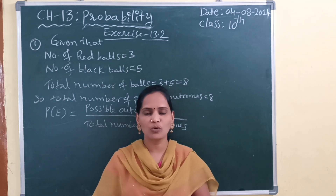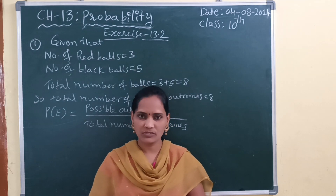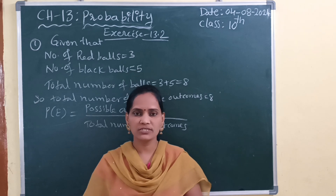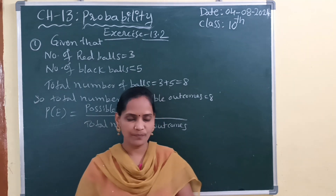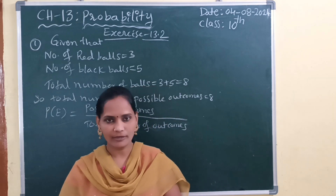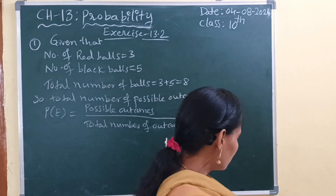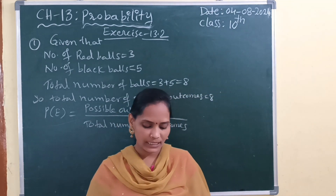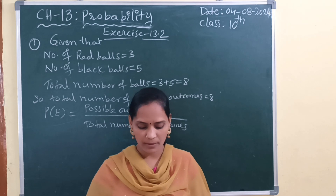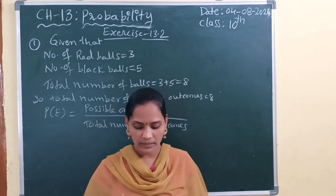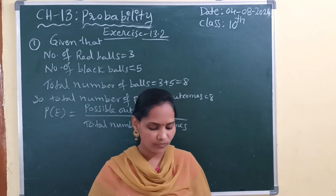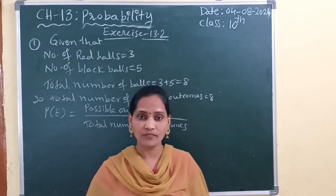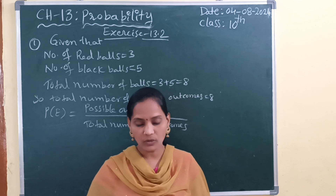In that, exercise 13.2. In the first question, I am going to explain. Before going to explanation, let me read the question. The question is: a bag contains 3 red balls and 5 black balls. A ball is drawn at random from the bag. What is the probability that the ball drawn is — first bit: red; second bit: not red.